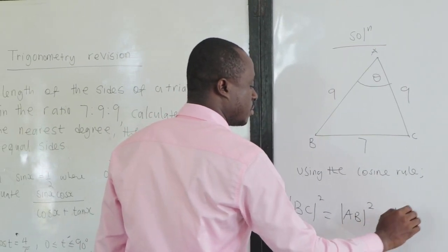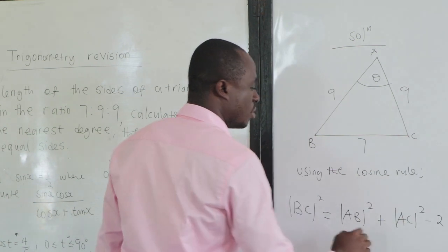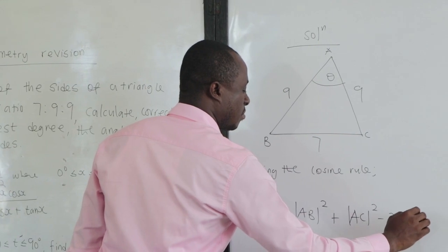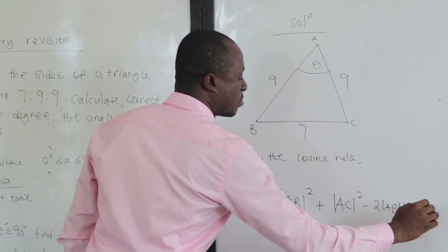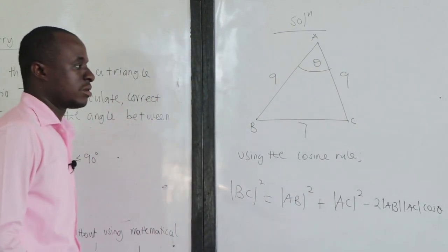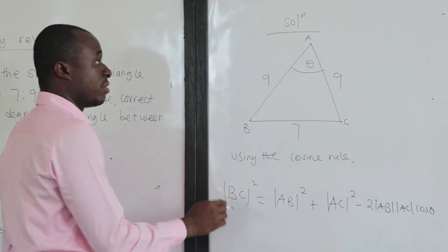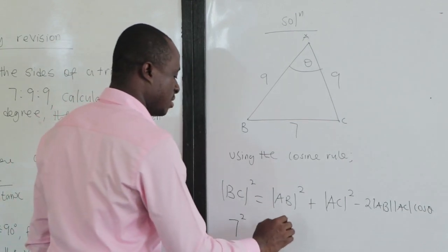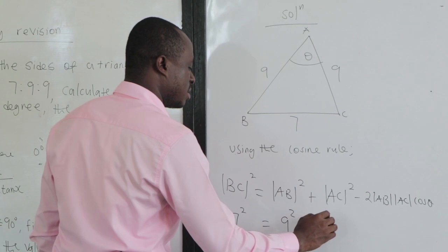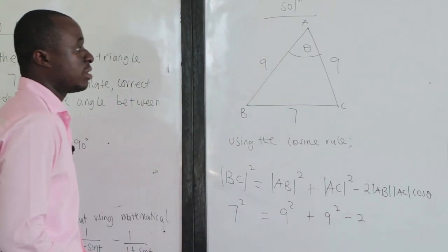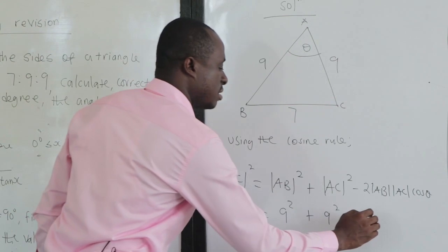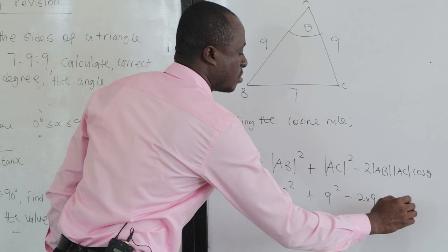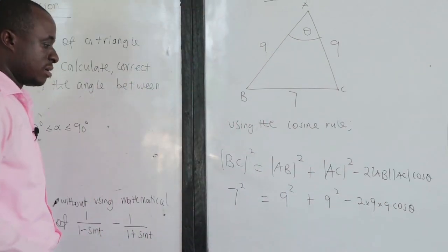...minus 2 times what you have added times the cosine of the angle. So we have: AC squared equals AB squared plus AC squared minus 2 times 9 times 9 times cos theta. That gives us 49 equals 81 plus 81 minus 162 cos theta.